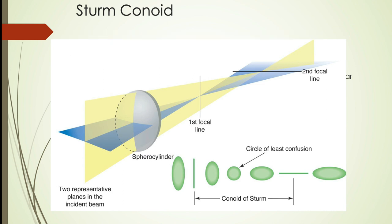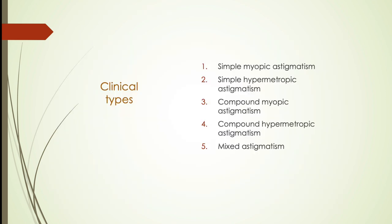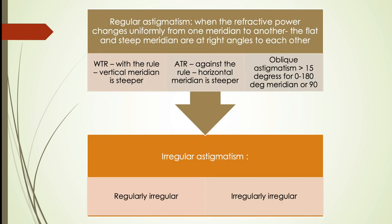Based on Sturm's conoid, a toric surface can generate five distinct types of refractive astigmatism: simple myopic astigmatism, simple hypermetropic astigmatism, compound myopic astigmatism, compound hypermetropic astigmatism, and mixed astigmatism. Astigmatism can be further categorized as regular astigmatism if the two meridia are at right angles to each other, and irregular astigmatism where they are not. Regular astigmatism is further subdivided into with-the-rule, against-the-rule, and oblique.